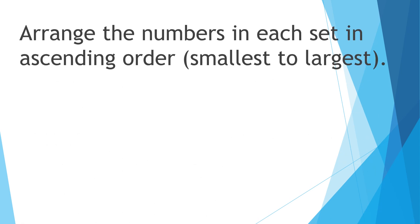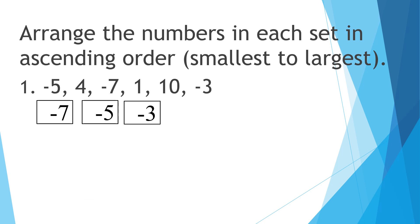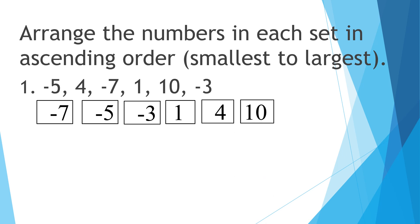Arrange the numbers in each set in ascending order, smallest to largest. Number one: negative five, positive four, negative seven, positive one, positive ten, negative three. The smallest number is negative seven, then negative five, negative three, positive one, positive four, and positive ten — the largest number.